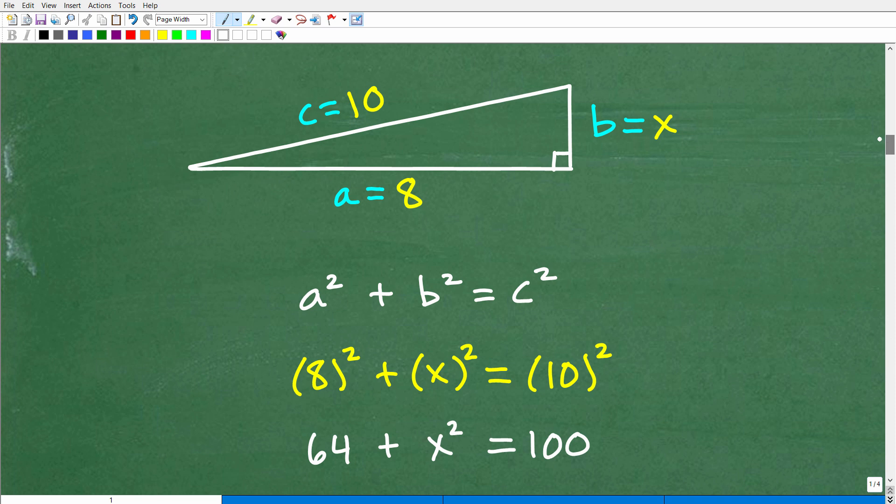Okay, so here is our triangle. We're told that this side is 8, this side is 10. So our longest side, 10, is C, in terms of what variable it represents. So c = 10. This side we'll call A, and then this side would be B.